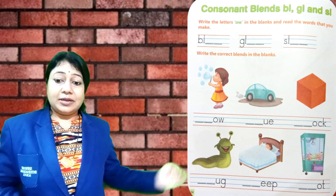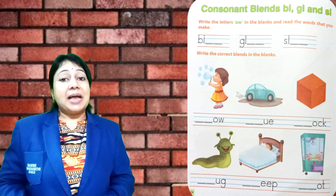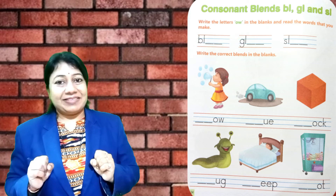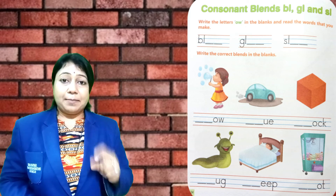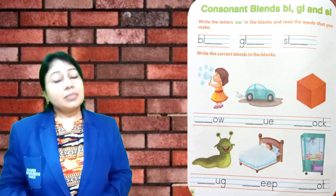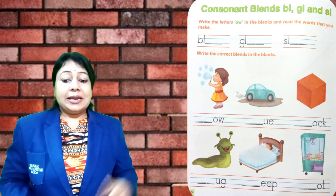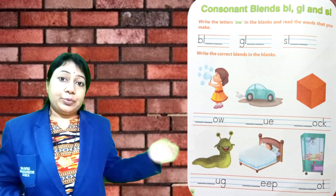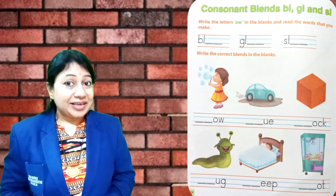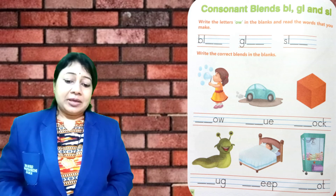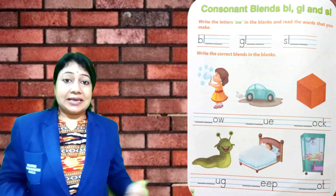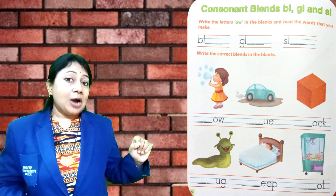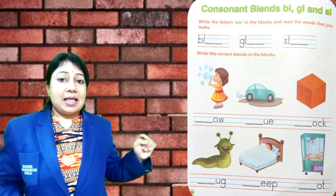Let's see what is written over here: Write the correct blends in the blanks. There are pictures to identify. First: blank, blank, O, W — that's blow. B, L, O, W — blow. Next: blank, blank, U, E — that's blue. B, L, U, E — blue. Next: blank, blank, O, C, K — that's block. B, L, O, C, K — block. Rest of the pictures you have to solve yourself.